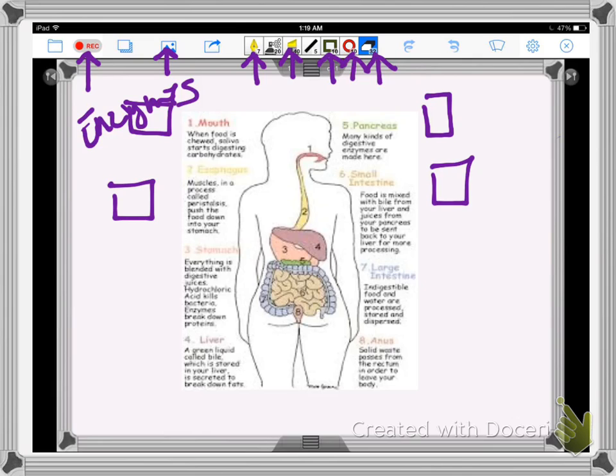So now that I'm ready to explain, I'm going to go up here to the record button. I'm going to hit record, and I'm going to start explaining. So digestion starts in the mouth. When food is chewed, saliva is added, and that starts breaking down the carbohydrates. So the enzymes are breaking down the carbohydrates into sugars.